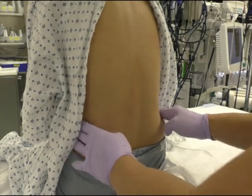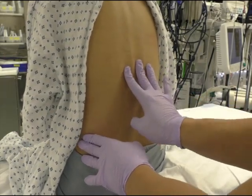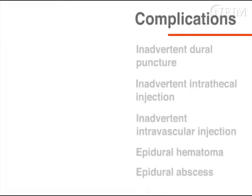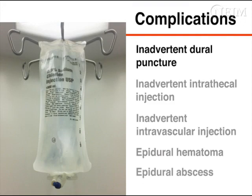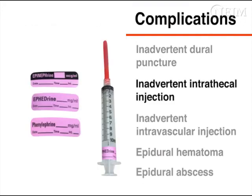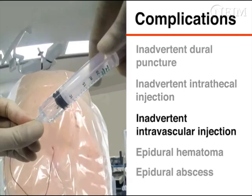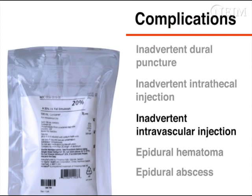Placement of a lumbar epidural catheter is generally straightforward, especially with proper preparation and technique, but several complications may occur. These include inadvertent dural puncture, which may result in a post-dural puncture headache managed with hydration, analgesics, or an epidural blood patch. Inadvertent intrathecal injection may result in a high-level spinal block causing hypotension, bradycardia, or apnea requiring fluids, vasopressors, and airway management. Inadvertent intravascular injection causes inefficacy and possible local anesthetic toxicity requiring lipid emulsion therapy.